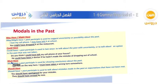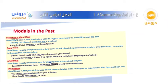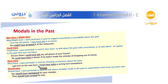Next: must have plus past participle is used for drawing conclusions about the past — when you have an idea about something and you draw a conclusion about the result. For example: I got lost on the way here. I must have taken a wrong turn somewhere. Because he got lost, he concludes he must have taken a wrong turn.